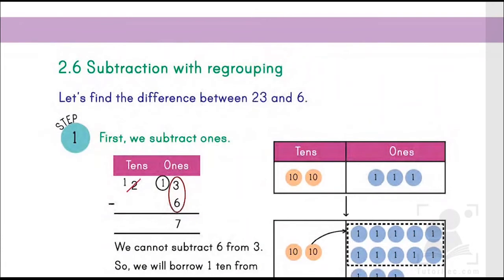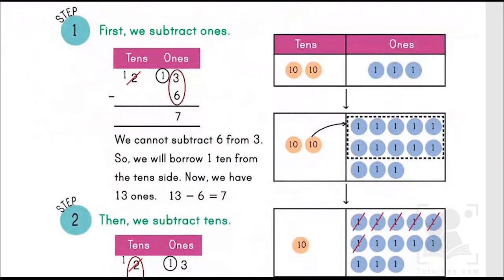This is another rule of regrouping. Regrouping means the carry ones. Let's find the difference between 23 and 6. Since the number 3 is smaller than 6 or less than 6 in value, what we are going to do is we are going to carry one number.